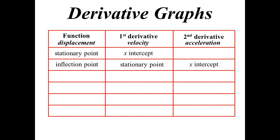If there is an inflection point on the displacement graph, we will get a stationary point on the velocity graph. If there's a stationary point on the velocity graph, there must be an x-intercept on the acceleration graph — that means the second derivative is equal to 0, hence why the inflection point creates this.